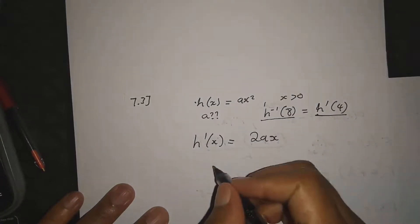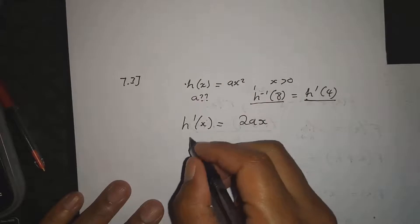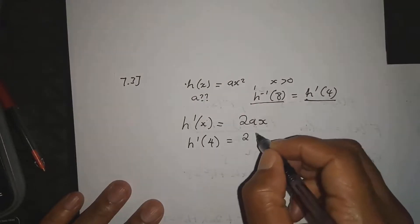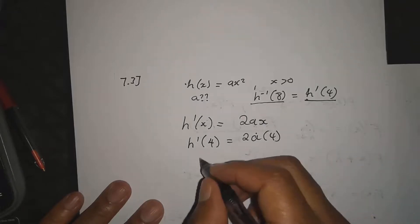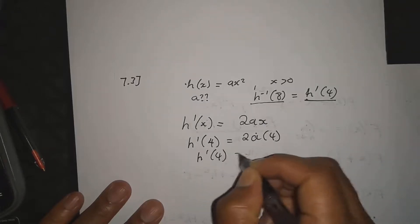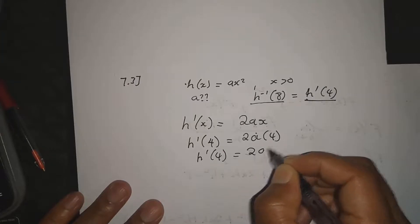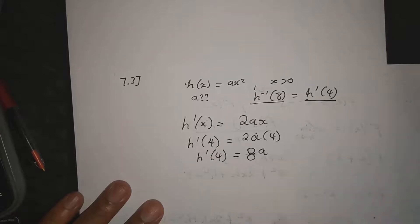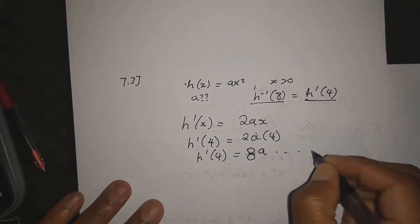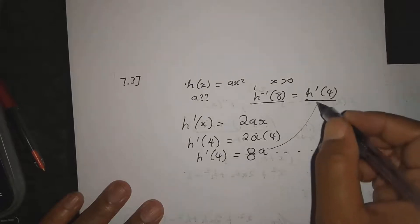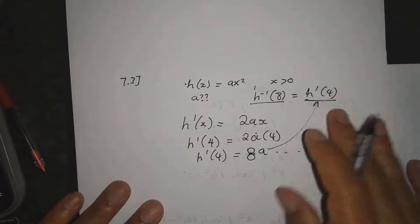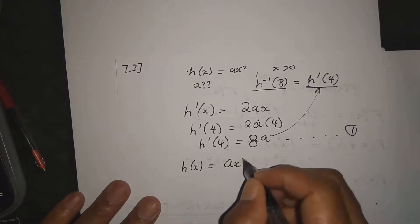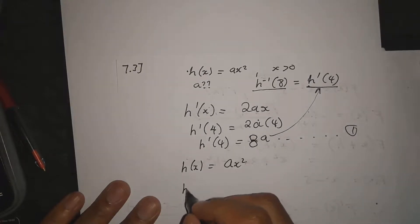Finding the derivative: h'(x) = 2ax. Substituting x = 4 gives h'(4) = 2 × a × 4 = 8a. This is our first equation.